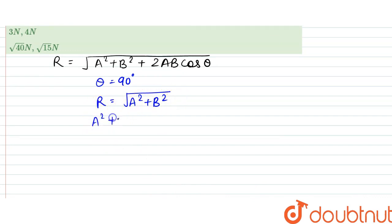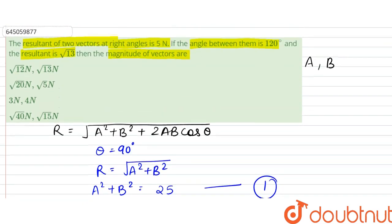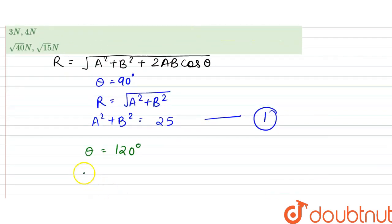A squared plus B squared would be equal to R squared, that is 5 squared, which is 25. That is our first equation. Now when theta is equal to 120 degrees, it is root 13.